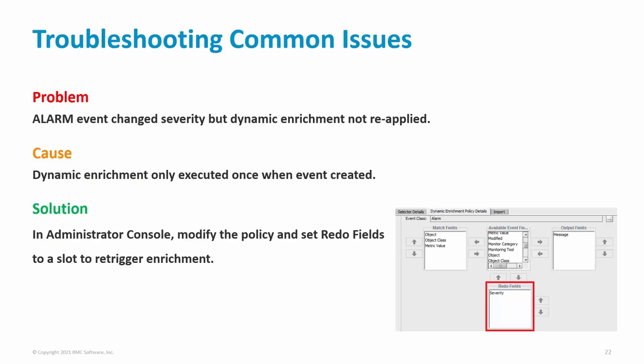If there is a dynamic enrichment policy in place for alarm-class events to enrich the message slot, you could face the problem whereby if the alarm event severity changes — which also results in a message slot change — the dynamic enrichment is not reapplied. By default, dynamic enrichment executes once, when the event is created. The solution is in the Administrator Console: modify the dynamic enrichment policy and set 'redo fields' to a slot which will re-trigger the enrichment — for example, the severity slot.